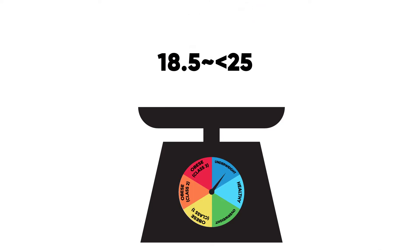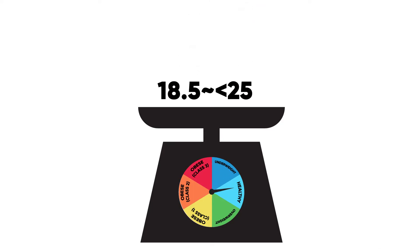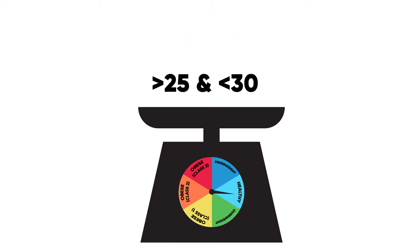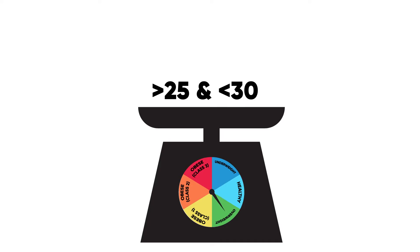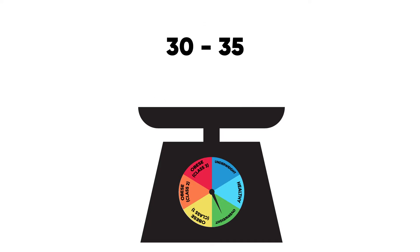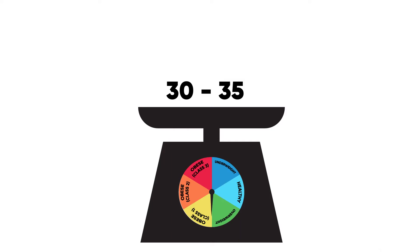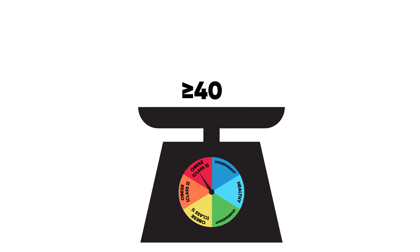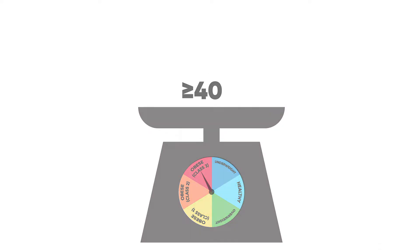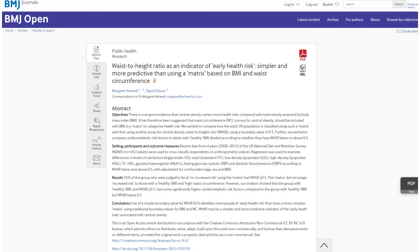According to the BMI scale: a BMI under 18.5 means a person is underweight; a BMI from 18.5 and below 25 means a person is healthy — according to this, Bisho's BMI is within the healthy range. A BMI above 25 and below 30 means a person is overweight. Similarly, a BMI from 30 to 35 is considered Obese Class 1, a BMI from 35 to 40 is considered Obese Class 2, and a BMI of 40 or higher is considered Obese Class 3.